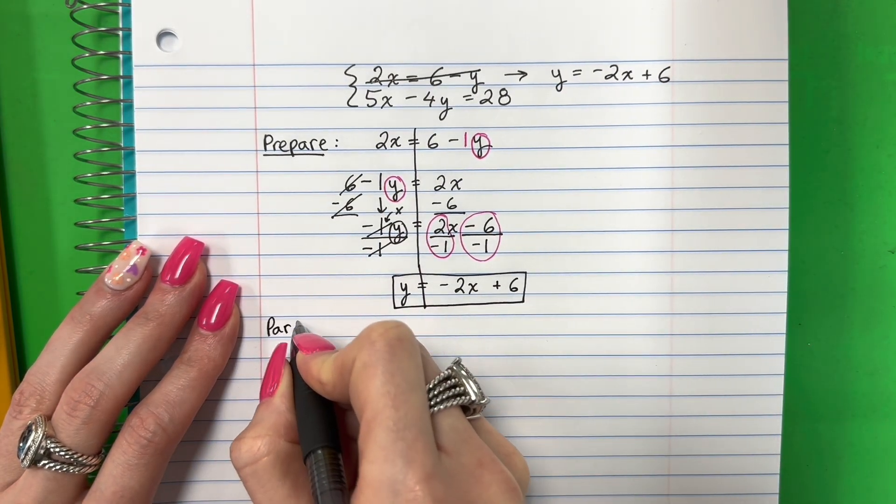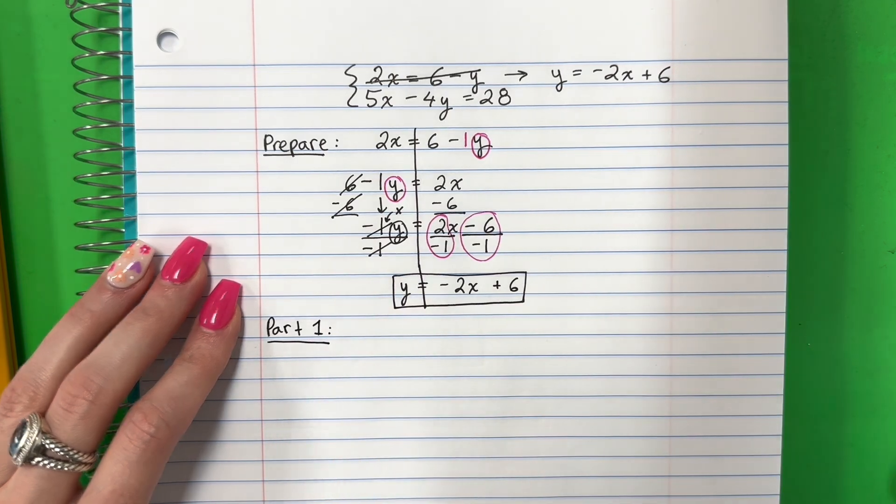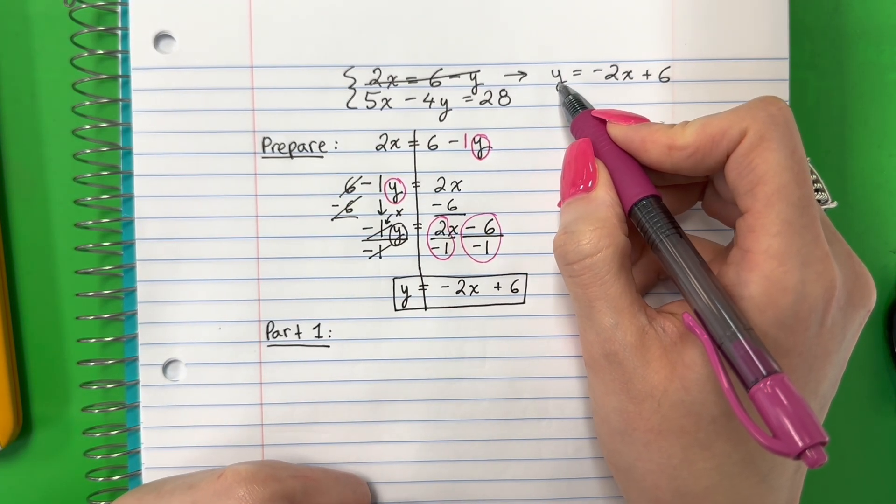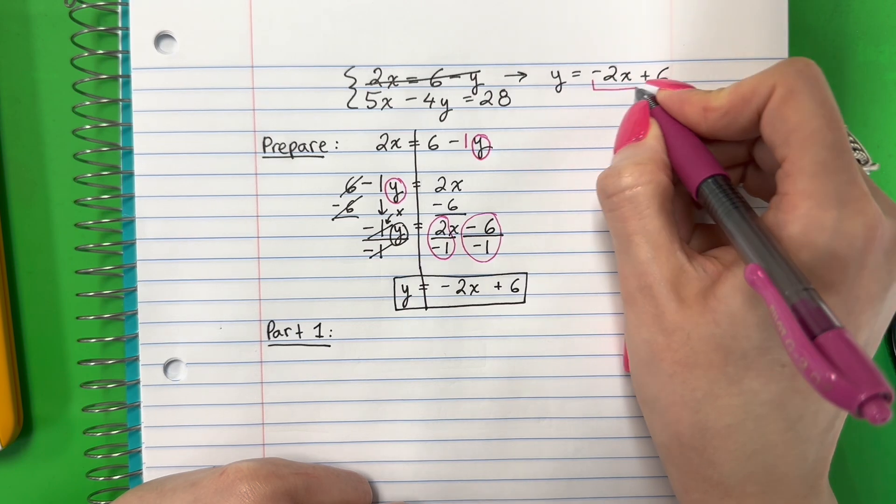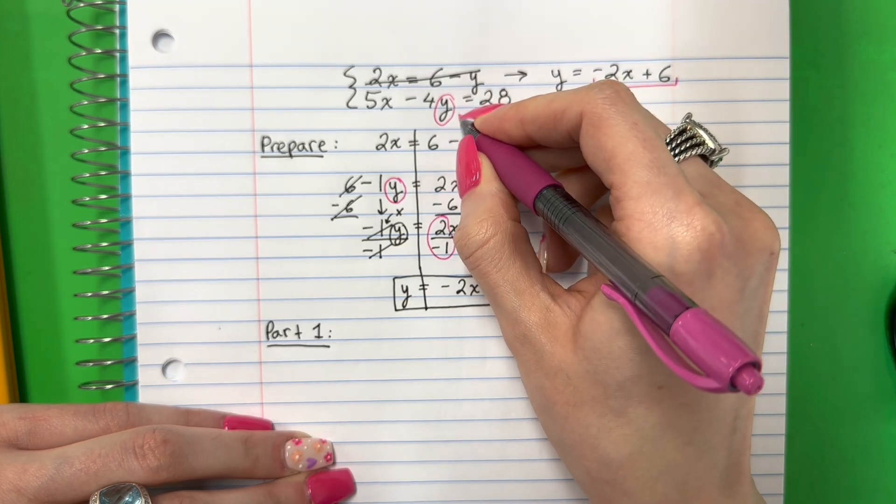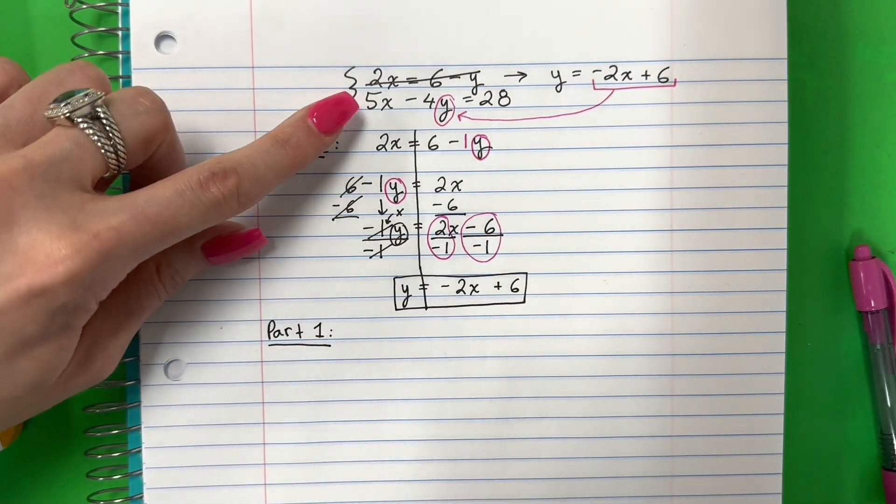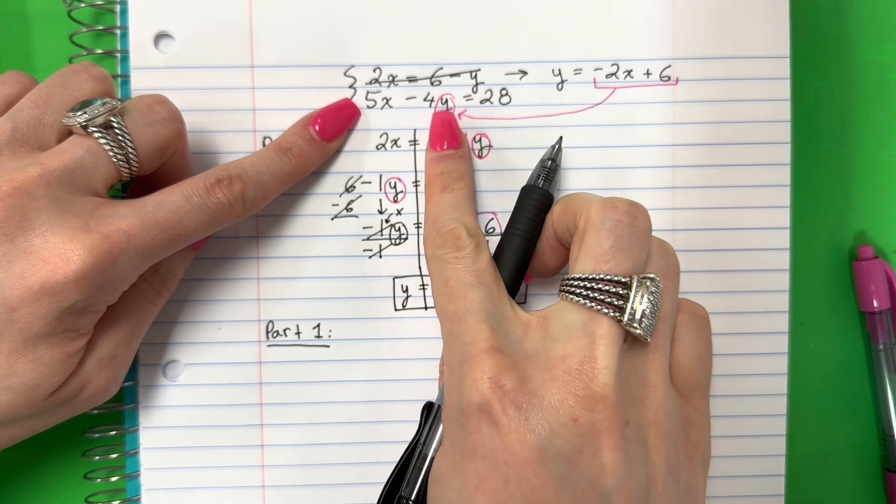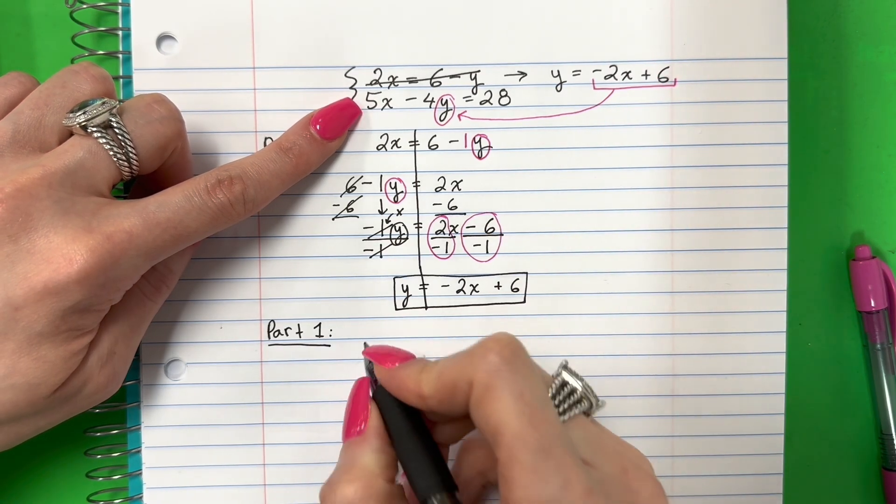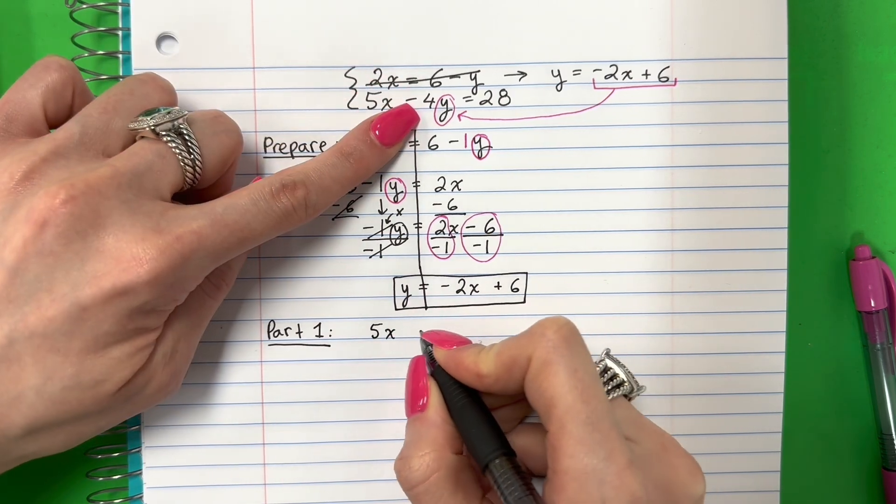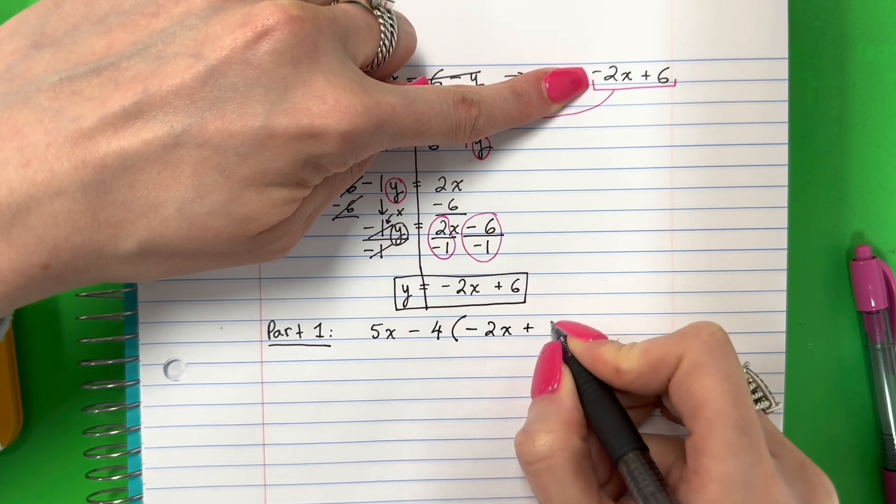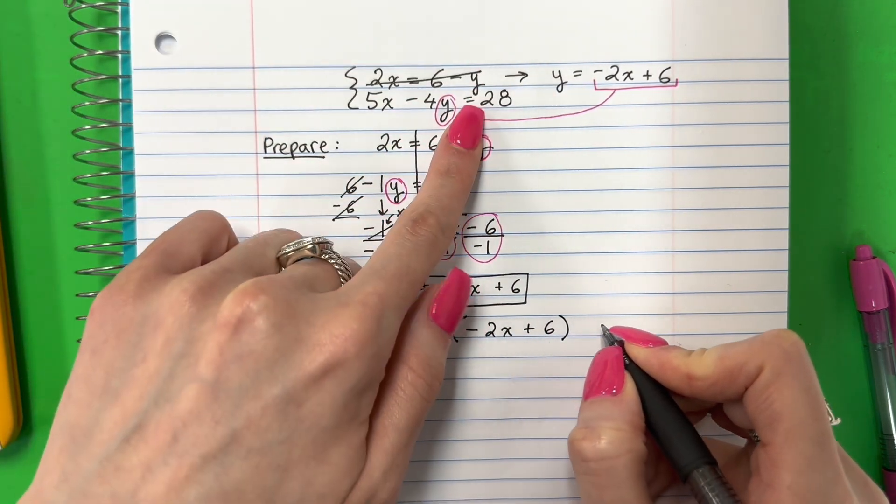Let's go ahead and begin now. Part 1. Now I'm going to go ahead and substitute. Ahora voy a substitutir. So, the letter that's alone is Y. La letra que está sola es Y. La yriega. So, this is Y. Todo eso es Y. I'm going to put it for this Y here. Voy a ponerlo allí en esta y. In parentheses. In parentheses. So, I'm going to copy. Voy a copiar. But the Y. Pero la Y. I'm going to replace with this. Voy a reemplazar con este. In parentheses. In parentheses. So, 5X minus 4. Parenthesis. Negative 2X plus 6. Parenthesis. Equals 28.